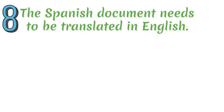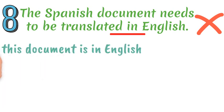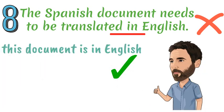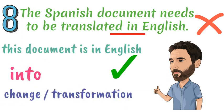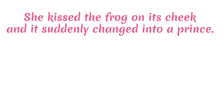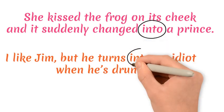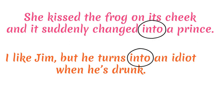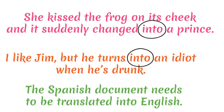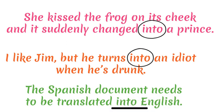Mistake number eight. Of course, you can say 'this document is in English', which means that is its current language. But we use the preposition 'into' to express that a change is taking place through the action. In this case we are changing a document from one language into another by means of doing a translation. For example: 'The Spanish document needs to be translated into English.'